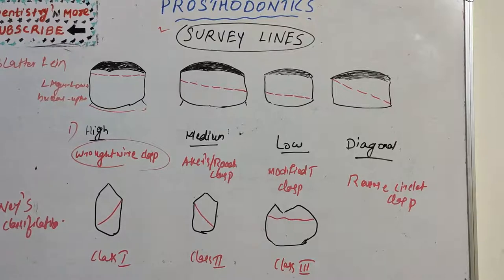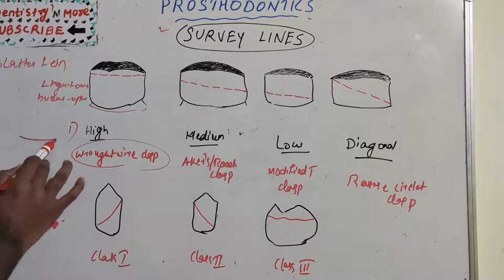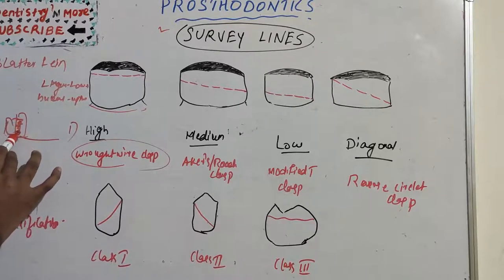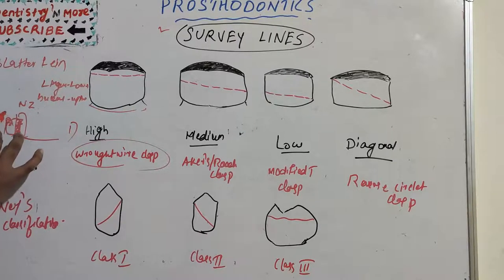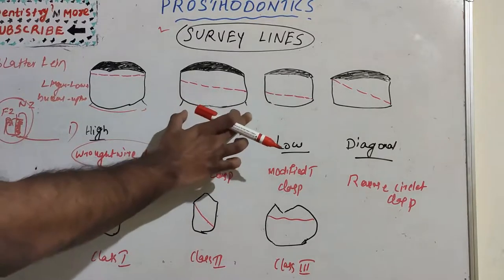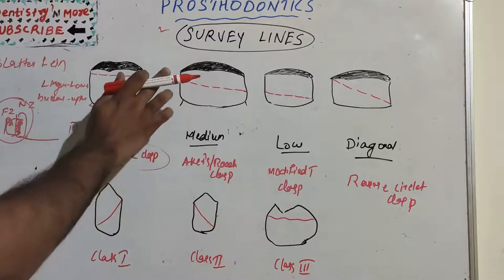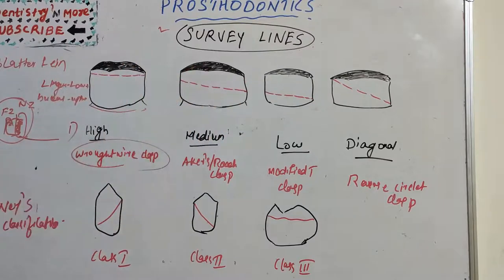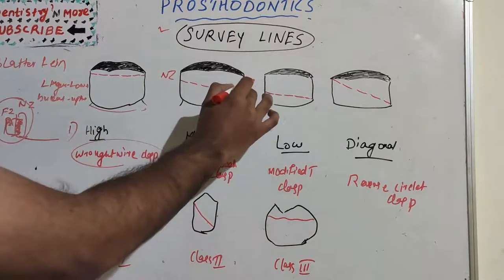Before discussing the medium survey line, we need to understand the near zone and the far zone. The zone adjacent to the edentulous space is the near zone, and the zone away from the edentulous space is the far zone. The medium survey line is situated across the center of the tooth — not toward the occlusal, not toward the cervical — but it exhibits a slight occlusal-gingival incline from the near zone to the far zone.